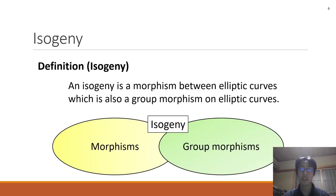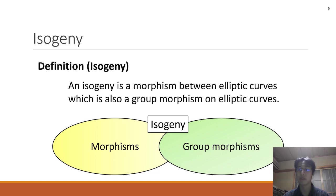Next, I'll tell you some mathematical backgrounds about isogeny-based cryptography. This is the definition of isogenies. An isogeny is a morphism between elliptic curves, which is also a group morphism on elliptic curves. And there is an important formula about isogenies.